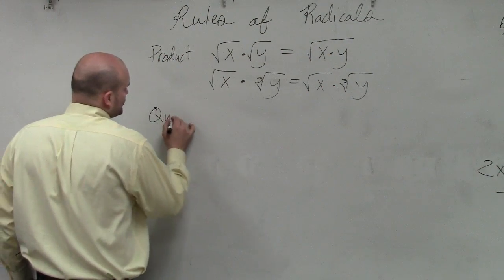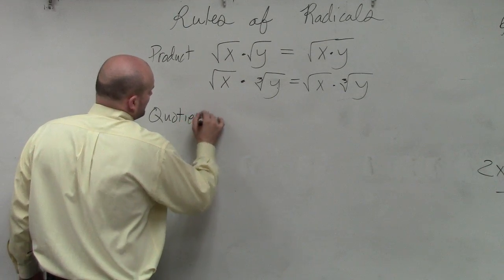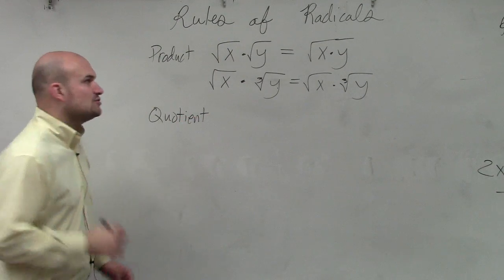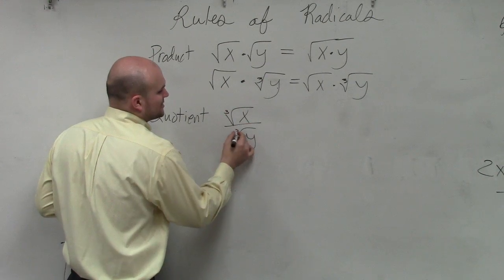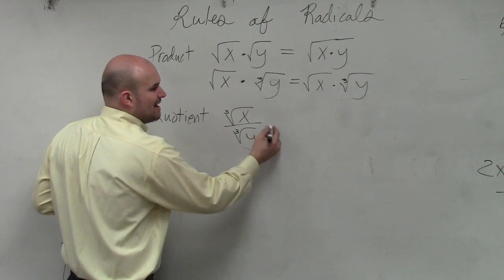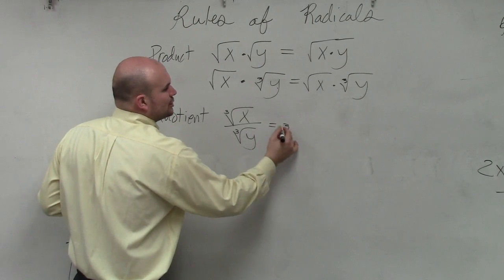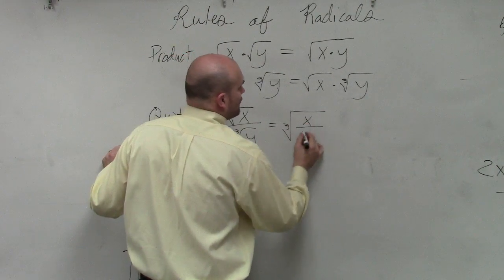And that is exactly true for the quotient. Now, the way that we like to write the quotient, if I have the square root of x over the square root of y, let's do cube root of x over cube root of y. To rewrite this, that is simply going to be the cube root of x over y.